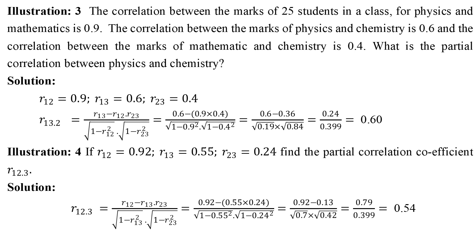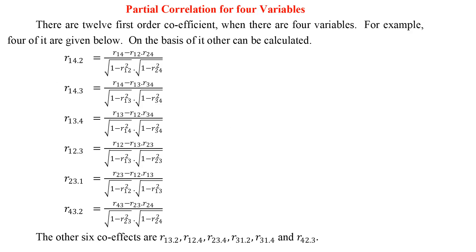Illustration 4: Find the partial correlation coefficient. Partial correlation for four variables — there are 12 first-order coefficients when there are four variables. Four of them are given as examples, and on the basis of those, the others can be calculated.